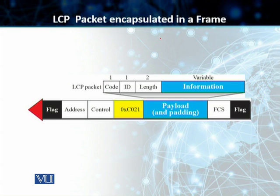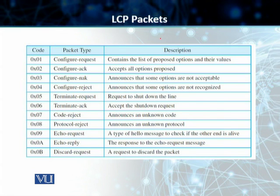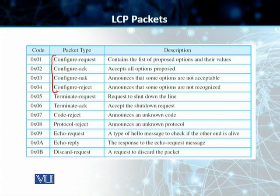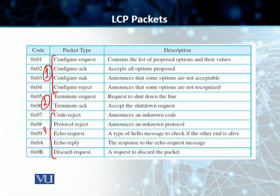The code is the first field of the LCP packet. On this slide you can see multiple different codes used for the link control protocol, divided into three categories. The first category comprises the first four packet types and is used for link configuration — configuration request, acknowledgement, no acknowledgement, and reject. The second category comprises packet types five and six and is used for link termination. The last five packet types are used for link monitoring and link debugging.